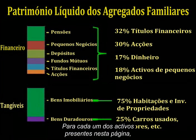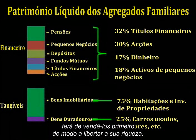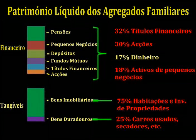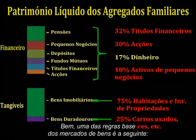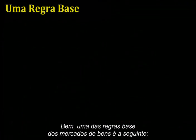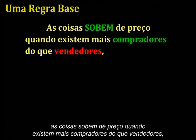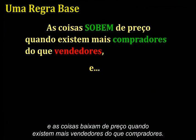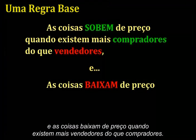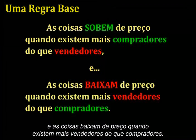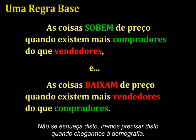For every single one of all of these assets — except cash — in order to liberate the wealth from these assets, you'd have to sell them first. One general rule of asset markets goes like this: things go up in price when there are more buyers than sellers, and things go down in price when there are more sellers than buyers. Hold on to that thought for when we get to demographics.